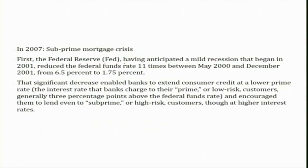The Federal Reserve, having anticipated a mild recession that began in 2001, reduced the federal funds rate 11 times between May 2000 and December 2001 — from 6.5% in 2000 down to 1.75% by the end of 2001. This significant decrease in interest rates enabled banks to extend consumer credit at a lower prime rate, which is the rate banks charge their lower-risk customers, generally 3 percentage points above the federal funds rate.